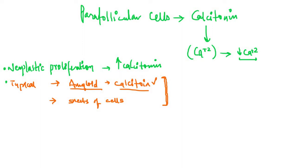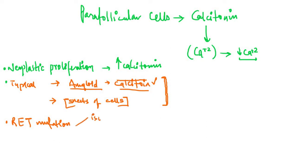This amyloid stroma is composed of calcitonin, and within it there are sheets of parafollicular cells. The basic mutation responsible for the pathogenesis of medullary carcinoma of the thyroid is called the RET mutation. This RET mutation leads to parafollicular cell neoplastic growth and ultimately to medullary carcinoma of the thyroid.